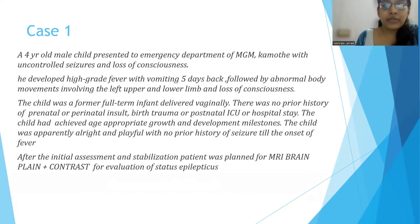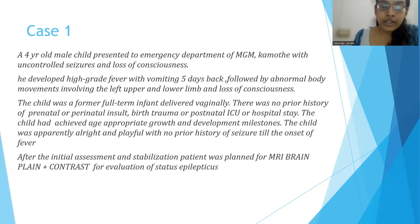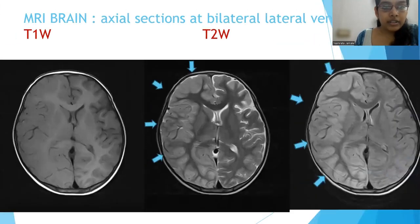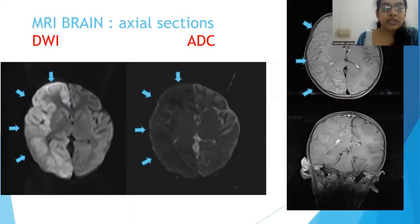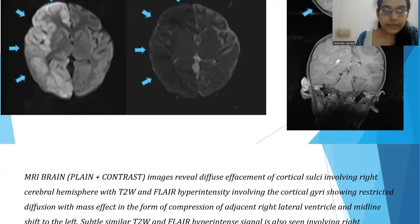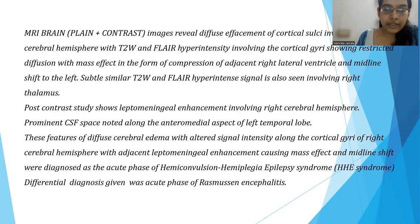First case: a four-year-old male child presented to the emergency with uncontrolled seizures and loss of consciousness. He developed high-grade fever with vomiting five days back, followed by abnormal body movements involving the left upper and lower limbs and loss of consciousness. The child had no significant prior history and had achieved all age-appropriate developmental milestones. MRI revealed diffuse cerebral edema involving the right cerebral hemisphere with T1 iso and T2/FLAIR hypersignal intensities, mild mass effect with compression of the right lateral ventricle and midline shift to the left. The T2/FLAIR hyperintense area showed restriction of diffusion on ADC and DWI images, and there was subtle leptomeningeal enhancement involving the right cerebral hemisphere. These MRI features were consistent with the acute phase of HHE syndrome, with differential diagnosis of acute phase Rasmussen's encephalitis.